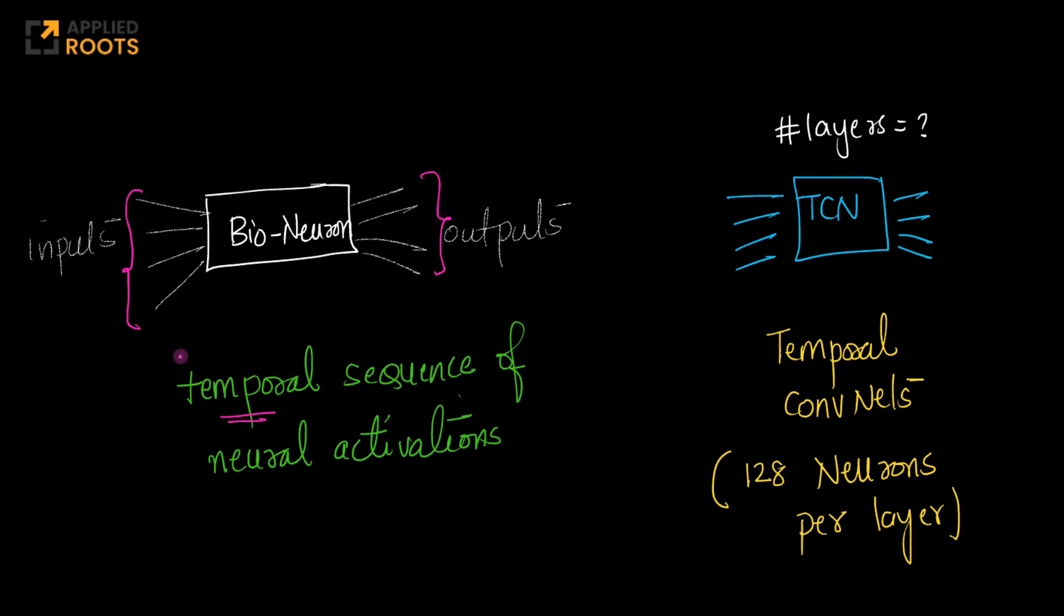What the researchers tried to do is, because this neuron processes spatiotemporal data, they have taken a specialized type of convolutional neural network called a temporal convnet or TCN. Temporal convolutional networks have been used since 2015-2016 onwards to process sequence data with convolution built into it. The researchers used a TCN and provided the same inputs given to the biological neuron. They said, what sort of neural network is required to generate very similar outputs? In each layer of this deep TCN, they had 128 neurons per layer, and the question was how many layers would be needed.